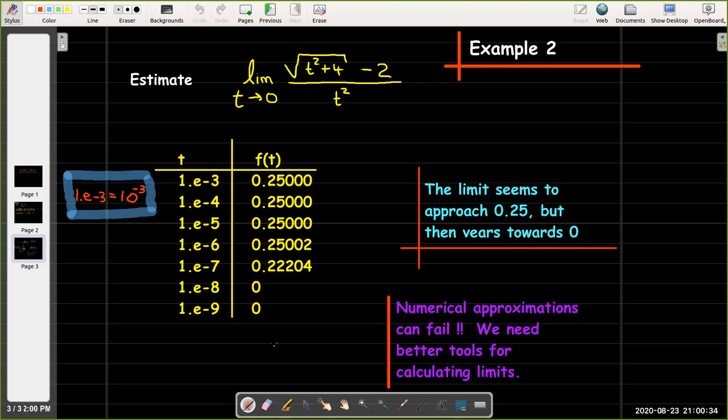So this is an example where just simply substituting numbers in can lead you into trouble. There are limitations to the technology that we use. And so by just substituting numbers in we can't really tell what is the limit. Is it 0.25? Is it 0.22? Is it 0? Maybe the limit doesn't exist.